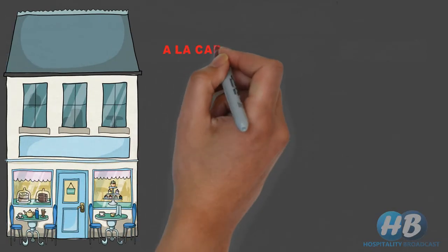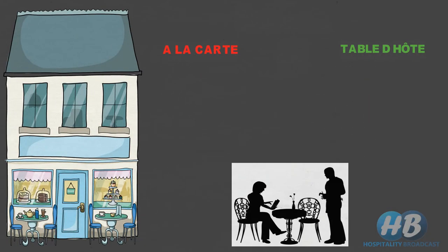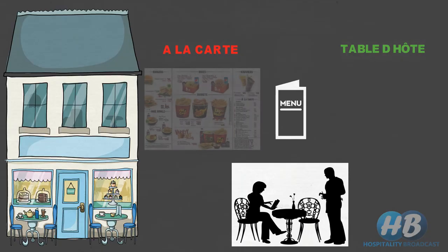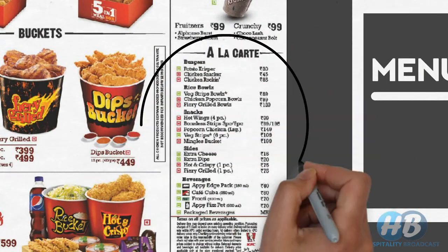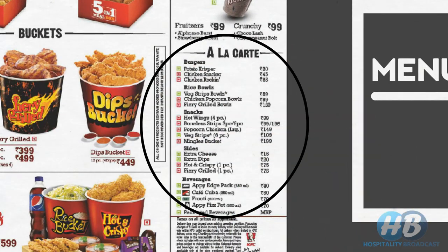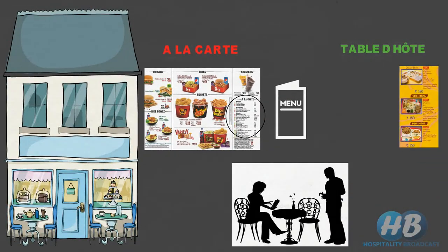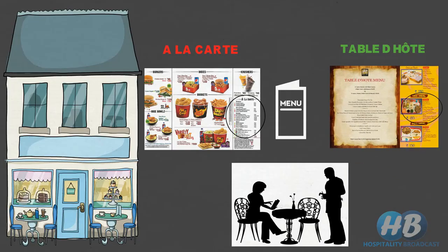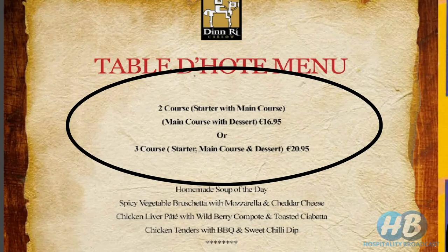In a hotel or restaurant, à la carte and table d'hôte are commonly used terms of menu. The main difference lies in the choice of dishes. In à la carte, customers have a variety of choices and all items are priced separately, whereas table d'hôte menu has limited choices and you have to pay the whole amount of the set cost even if you skip some items.